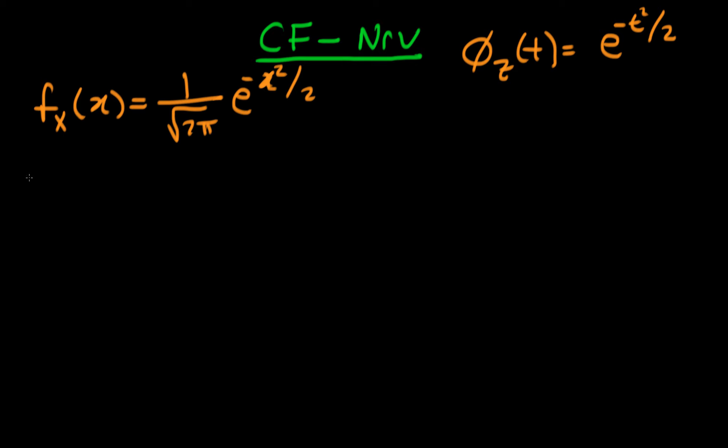Now we have everything we need to find the characteristic function for our variable x, which is a standard normal random variable. The characteristic function is defined as the expectation of e to the i t x, parameterized in terms of parameter t.